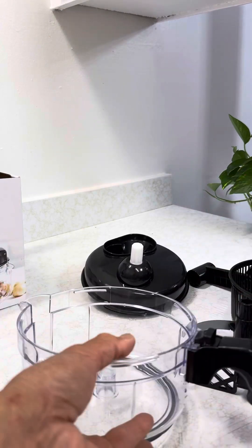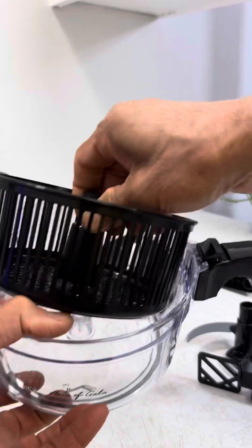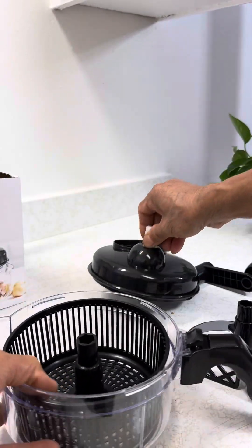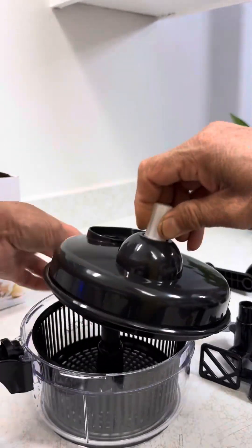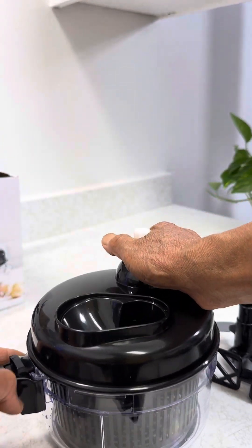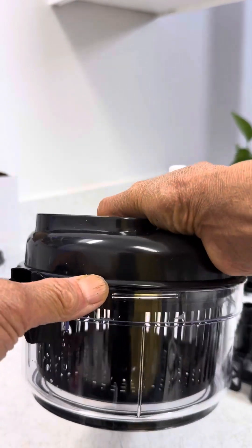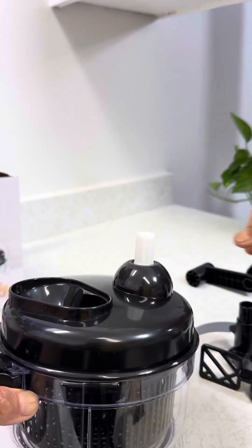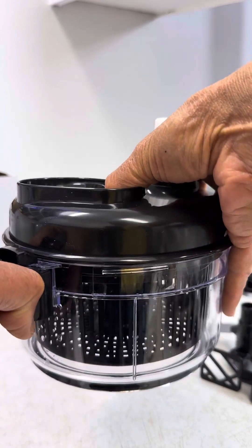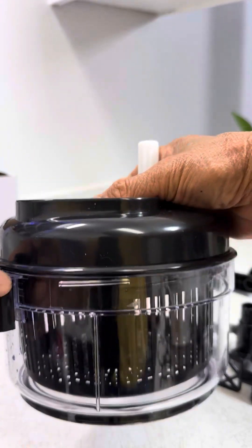Let's say I want to spin my salad. Put this basket in there, line it up like that, and then put this here. You turn it clockwise to lock it and close it. And when you open it, turn it counterclockwise and open it. So I close it.